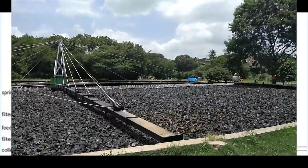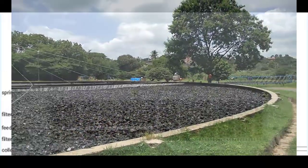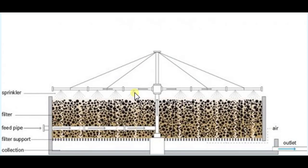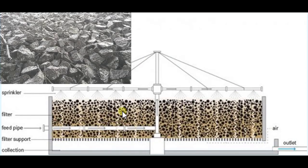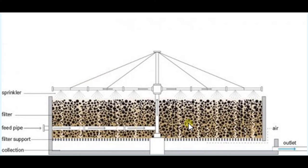Water is distributed evenly throughout, and the black dots represent the media placed inside the trickling filter. The media can be anything with a large surface area — rock, gravel, shredded PVC bottle, or specific preformed plastic filter media.